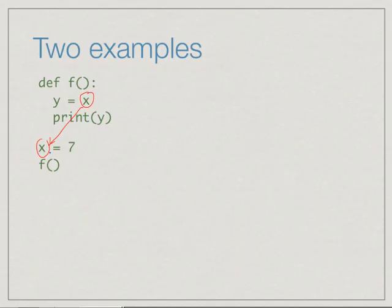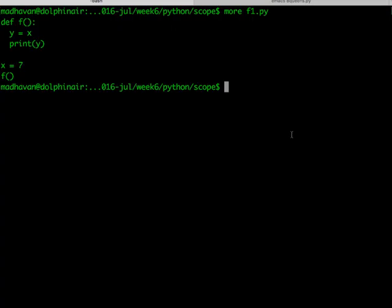Here we see the function we have written in a file f1.py which contains exactly that code. We have a function f which reads an x from outside and tries to print it. And if we run this, then indeed it prints the value 7 as we expect. So y gets the value 7 because x has the value 7 outside, and that x is inherited inside the function.